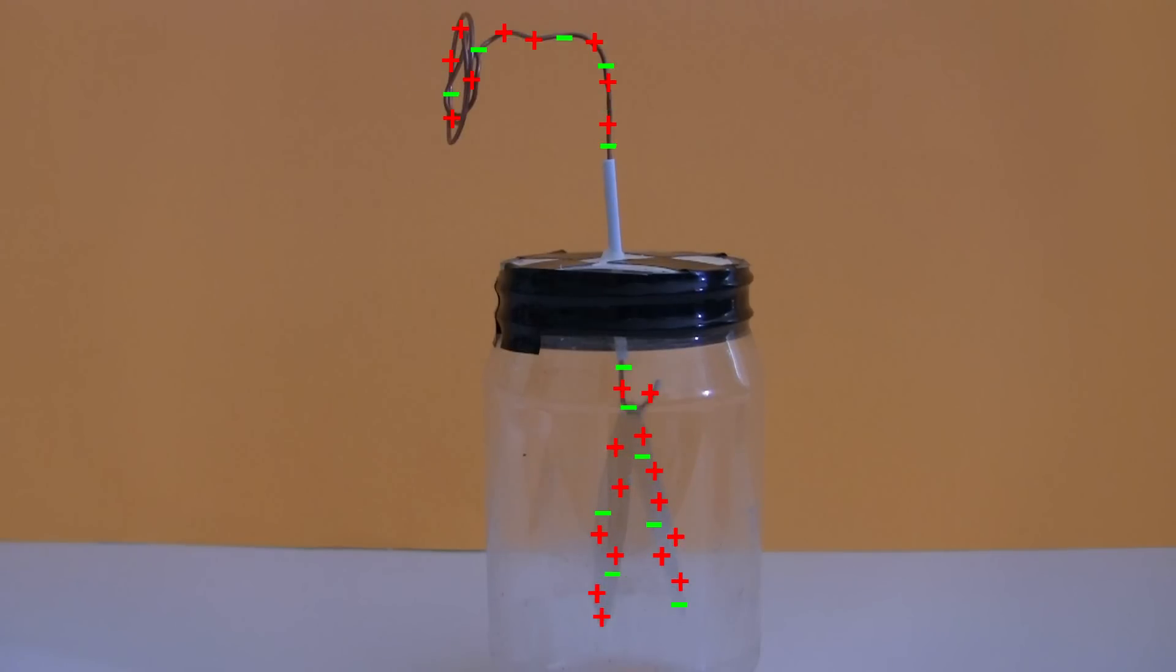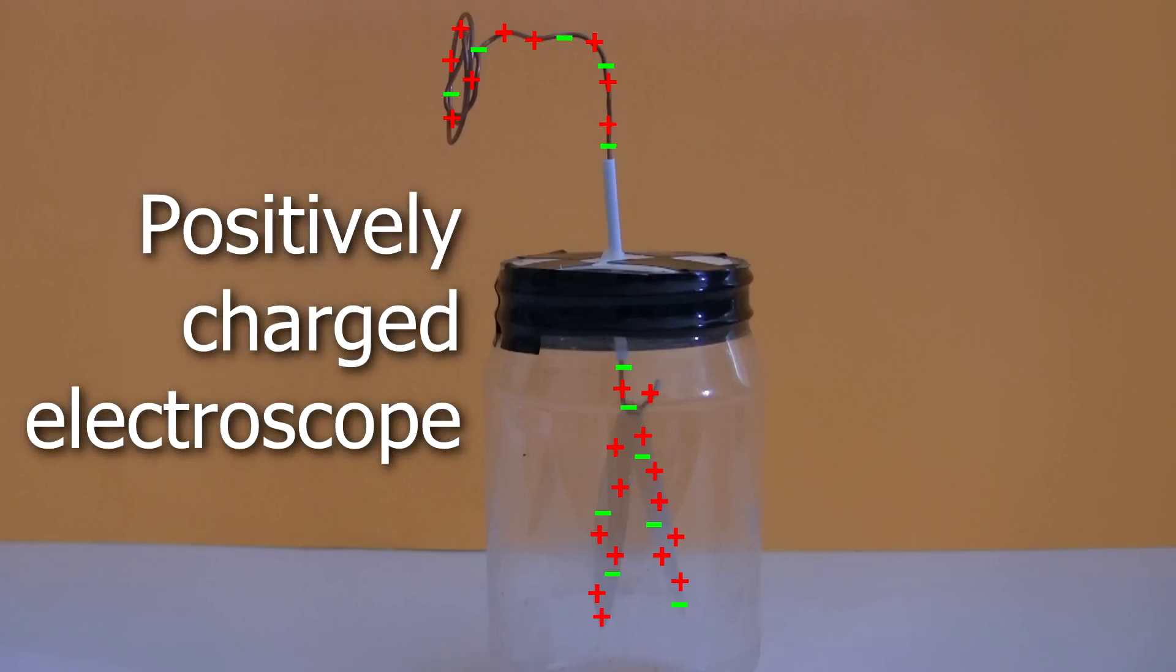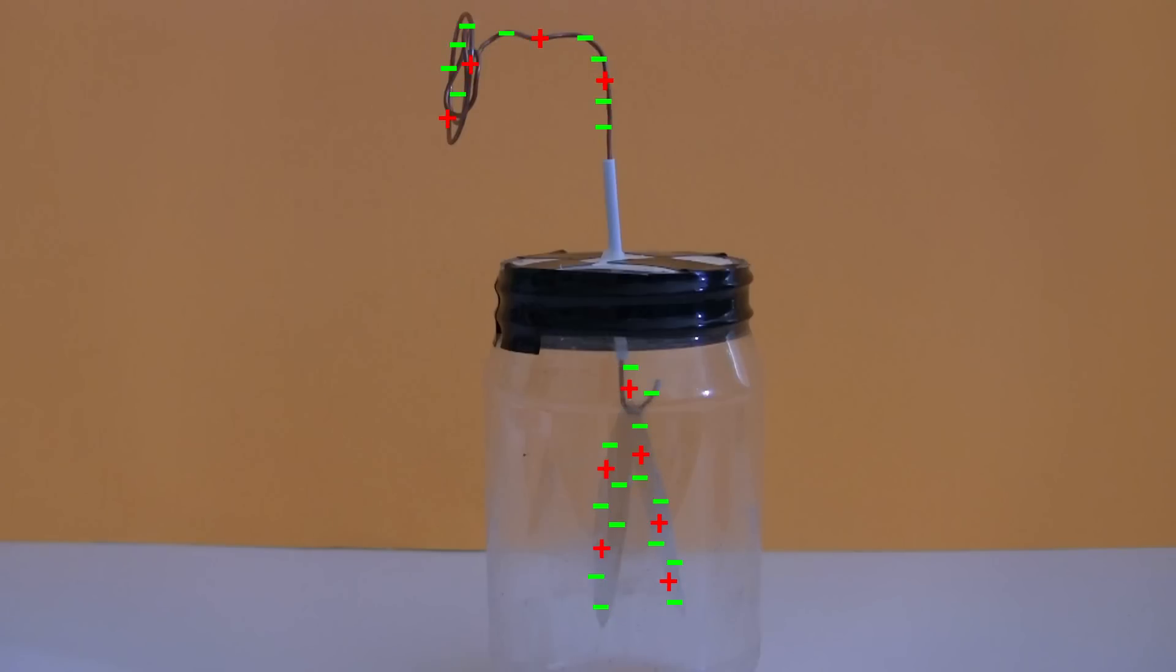Note that this whole demonstration was done with the electroscope positively charged. The leafs would have behaved the exact same way if it was negatively charged instead. The only difference would have been in the direction the electrons would have moved. I'll leave that as an exercise for you.